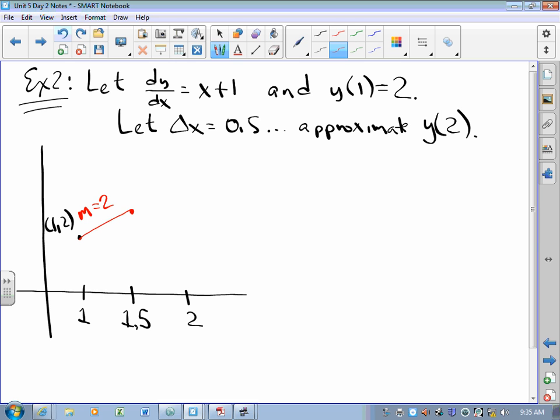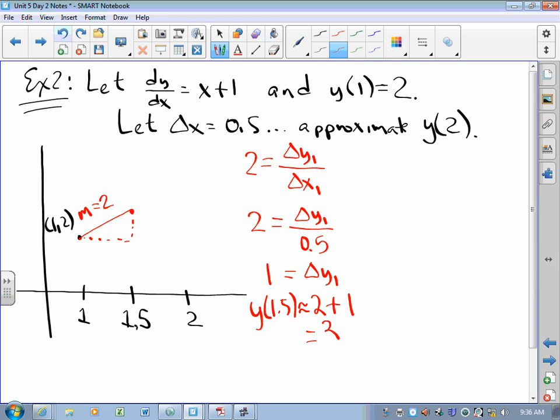So I'm going to draw a tiny piece of tangent line with a slope of 2. And I'm going to ask myself, how did this slope come to be? Well, this slope is a change in y over a change in x. But I know what the change in x is. That's 0.5. And so the first change in y is 2 times 0.5. That's 1. Which means that the y value at 1.5 is approximately the previous y value plus the change in y. That's 3. This point right here is the point (1.5, 3).